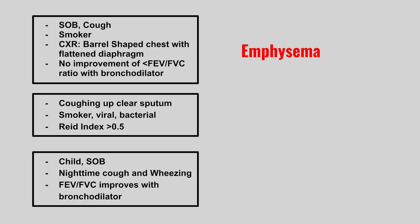Now we have a patient coughing up clear sputum, a smoker, with a recent viral or bacterial infection, and the Reid's index is over 0.5. This is bronchitis. Oftentimes for bronchitis, they'll mention a patient with a long history of this cough and sputum production.